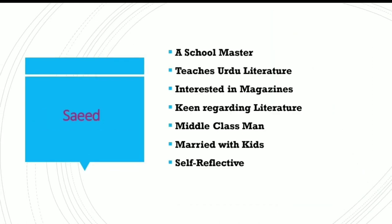Now we are going to talk about the main character of this story, that is Saeed. Through textual evidence, we have gathered that Saeed is a schoolmaster related to Urdu literature, and he likes to read — we can see him very much interested in a magazine time and again. He is a middle-class man, married with kids. He is self-reflective, and this self-reflectiveness appears quite a few times in the text.